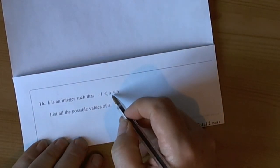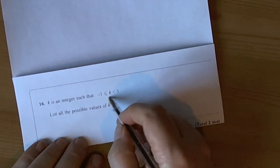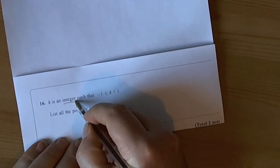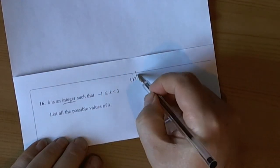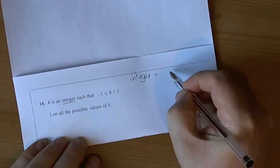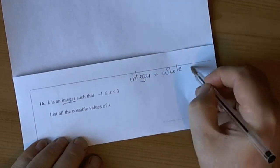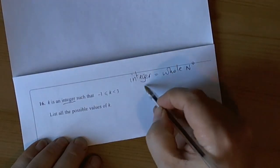This question wanted you to find the values of k that made this inequality statement true. They've told you that k is an integer, so we have to remember that the word integer simply means any whole number, both positive or negative.